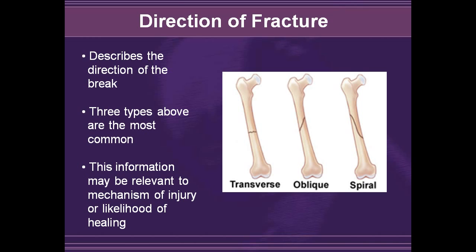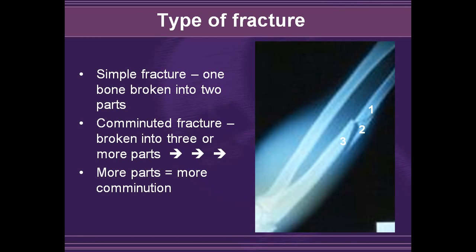When describing the direction of a break, a transverse fracture is exactly perpendicular to the direction of the bone. Oblique and spiral fractures are as described on the images — those are the most common. The information may be relevant to the mechanism of injury and may give indications to look at other bones or soft tissues for additional injury. A simple fracture is where a single bone has broken into two parts, while a comminuted fracture is where the bone has broken into three or more parts. This is an example of a comminuted fracture with three portions.